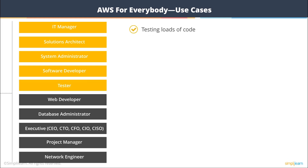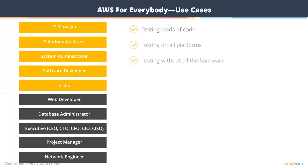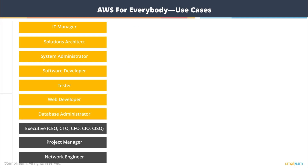If you're a tester testing loads of apps on iOS, Android, and all their versions, you might not have all those hardware devices. AWS provides a service where you can test your application on any number of devices with any number of operating systems, all in a pay-as-you-go model. If you're a web developer or database administrator, AWS offers managed services so you don't have to do the heavy lifting of managing the OS or security patches — just run your code and put your data in.